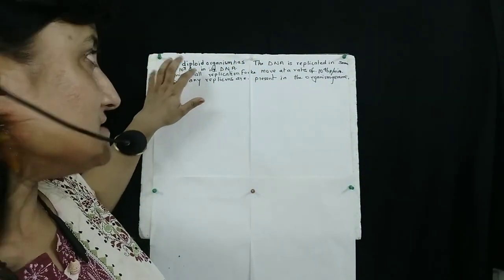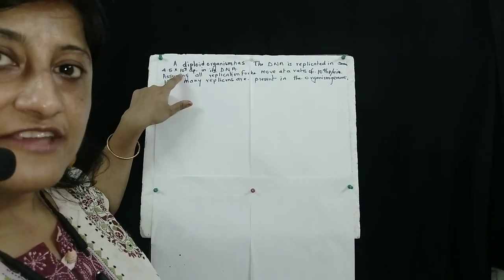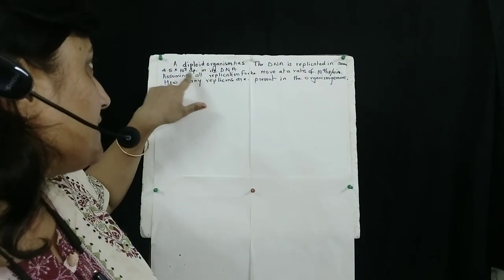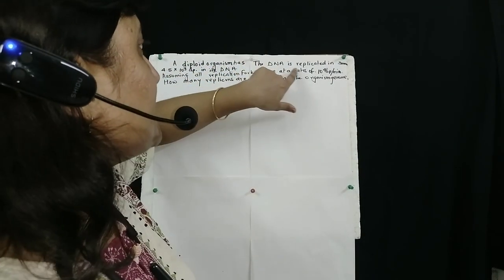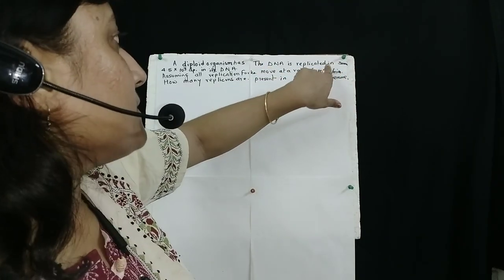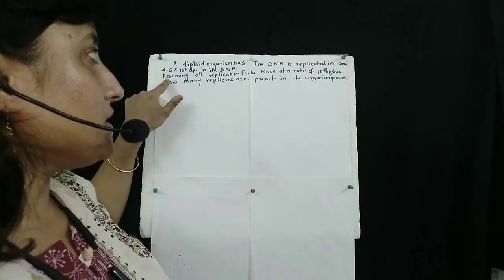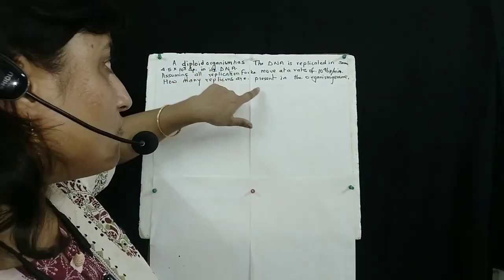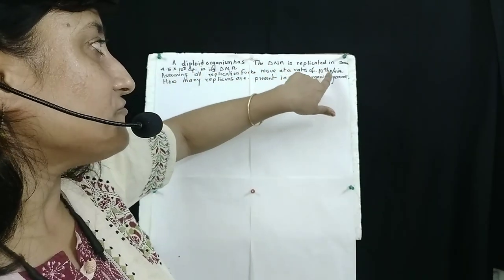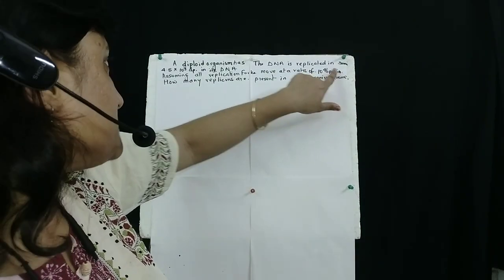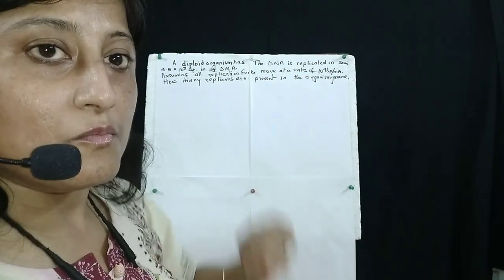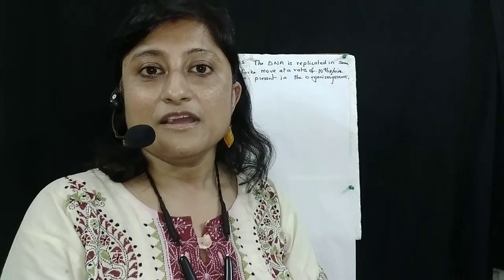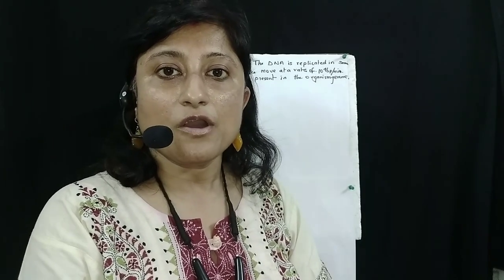The problem reads: a diploid organism has 4.5 × 10⁸ base pairs in its DNA. The DNA is replicated in 3 minutes. Assuming all replication forks move at a rate of 10⁴ base pairs per minute, how many replicons are present in the organism's genome?